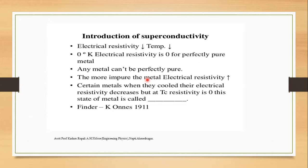This applies to metals. If we take a certain temperature and a certain condition, after cooling it is in an extremely low condition. So it is called superconductivity. In the case of certain metals, when they are cooled, their electrical resistivity decreases.